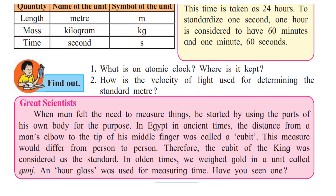Now let's get acquainted with a great scientist's perspective. When man felt the need to measure things, he started by using parts of his own body. Initially people used the hand span, arm length, or number of feet to measure. In ancient Egypt, the distance from one man's elbow to the tip of his middle finger was called a cubit. However, this measure would differ from person to person — some are tall, some are short — so the arm length would be different.